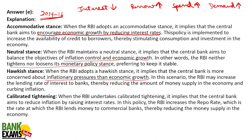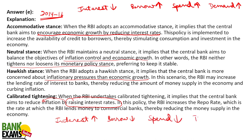Calibrated tightening means the RBI is raising interest rates to reduce inflation. As the interest rate goes up, people borrow less; if people borrow less, spending goes down; if spending goes down, demand goes down; and obviously production goes down, leading to layoffs and unemployment. People spend less money — that is calibrated tightening.